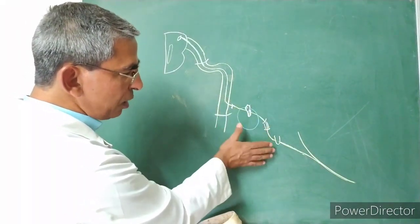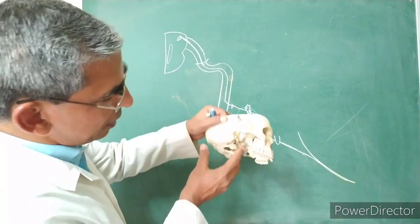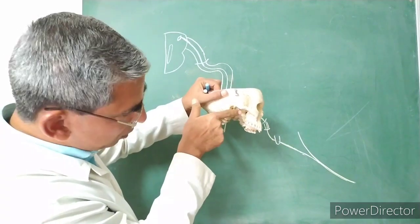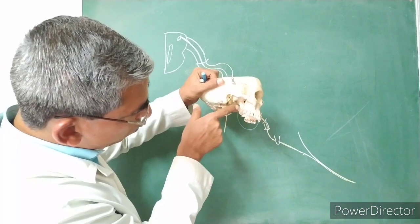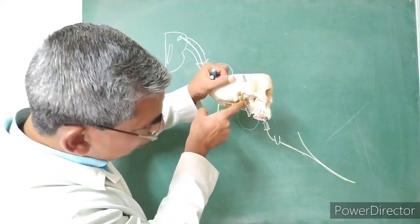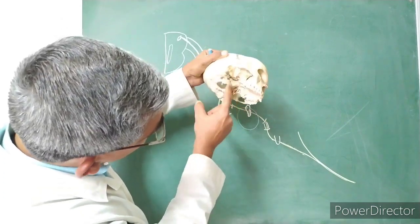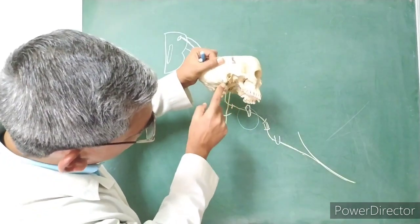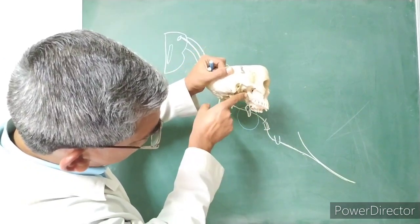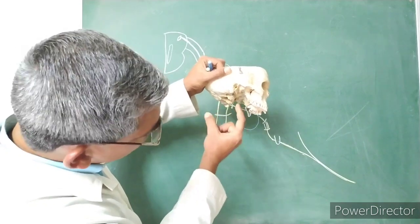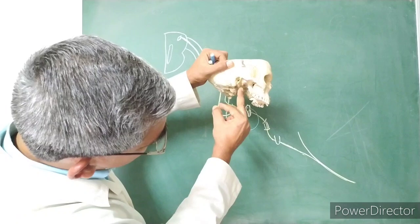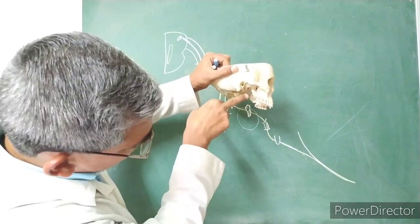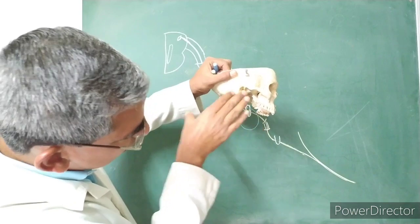Regarding the relations of the chorda tympani nerve in the infratemporal region: laterally it is related to the lateral pterygoid muscle, the spine of the sphenoid bone, the middle meningeal artery passing through the foramen spinosum, the auriculotemporal nerve, and the inferior alveolar nerve — which are all lateral relations as it descends downward.